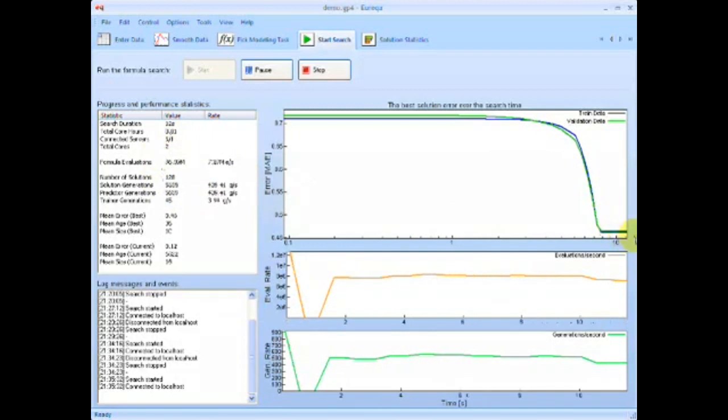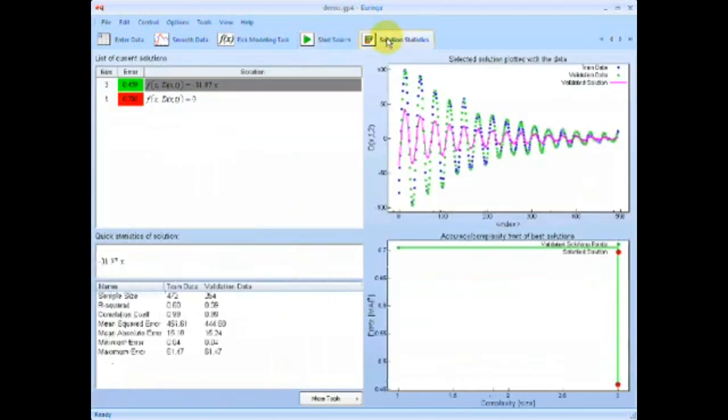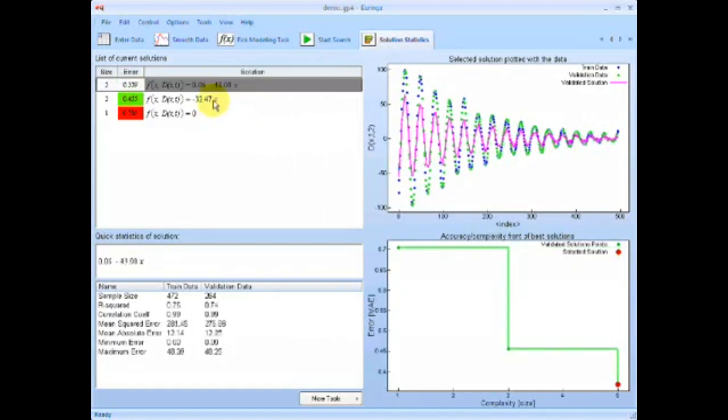So it looks like it's starting to find some accurate models, let's look at what these look like in real time. So immediately it's picked up on this small angle approximation of a sine term.